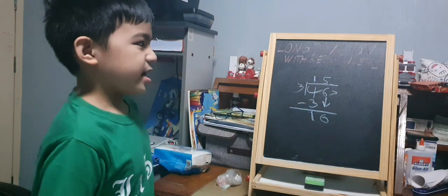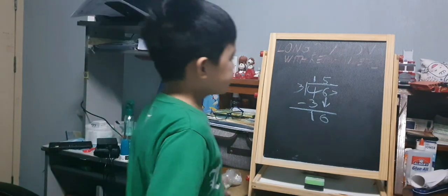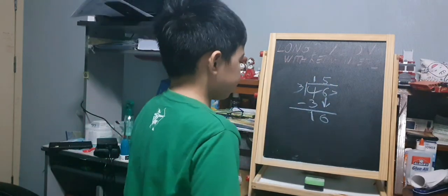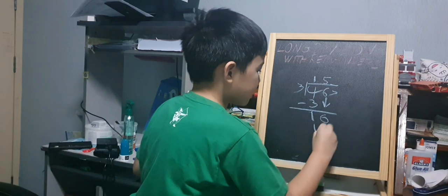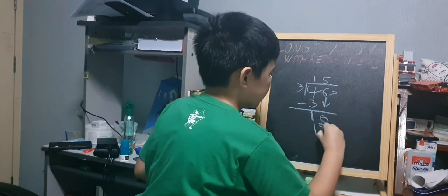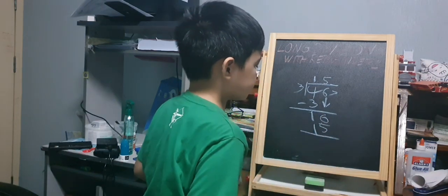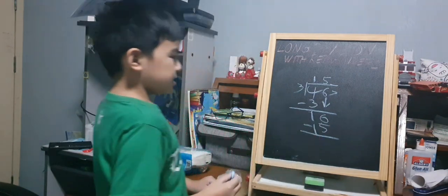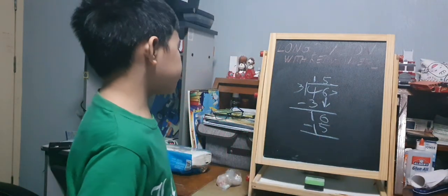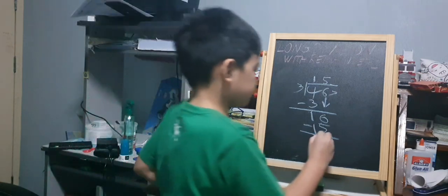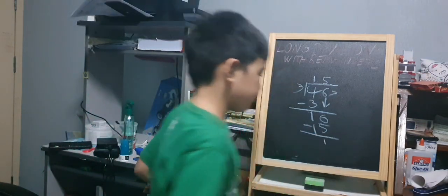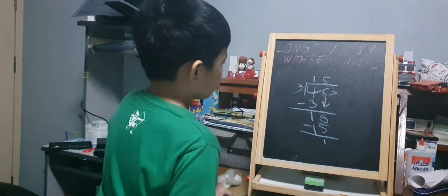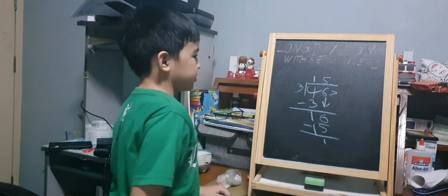Then we multiply again. 5 times 3 is 15, so we will put 15 under 16. 16 minus 15 is 1. Again, we can't divide 1 by 3, so we will bring down 7.